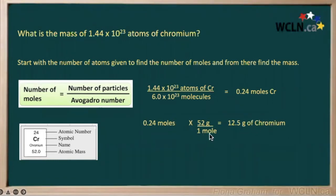Our mole units cancel out. So we have 0.24 times 52, giving us 12.5 grams of chromium.